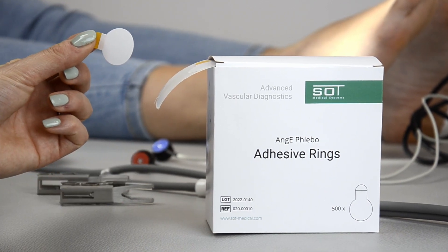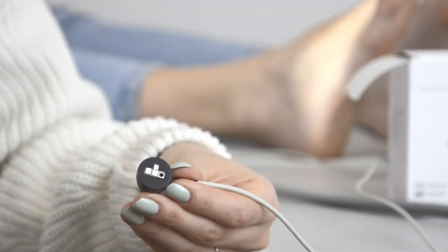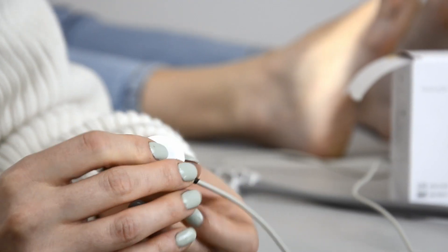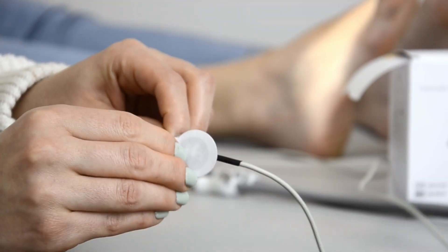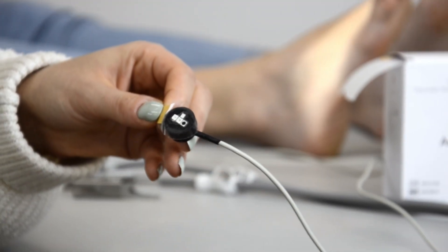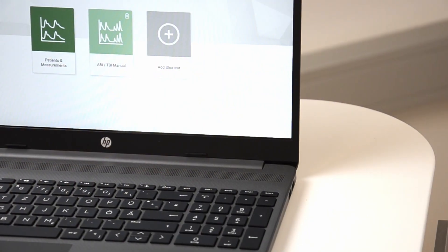To apply the double sided adhesive rings, take one ring off of the roll and apply it to the sensor firmly. Peel off the protective layer. The adhesive rings are for one time use only and have to be removed after the measurement.